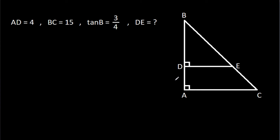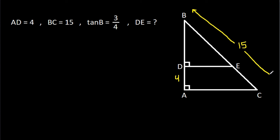In this video, we have been given that AD is 4 and BC is 15 and tanB is 3 over 4, then we have to find DE.